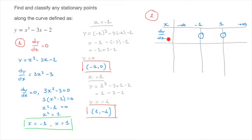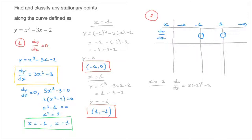Working from left to right, to determine the sign of dy/dx between negative infinity and negative 1, I evaluate at any point in that interval. Choosing x equals negative 2: dy/dx equals 3 times negative 2 squared minus 3, which equals 3 times 4 minus 3, giving dy/dx equals 9. Since 9 is positive, dy/dx is positive for all x between negative infinity and negative 1, so I put a plus sign in the table.